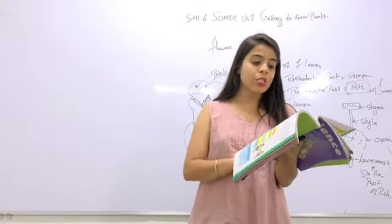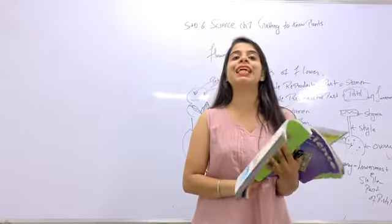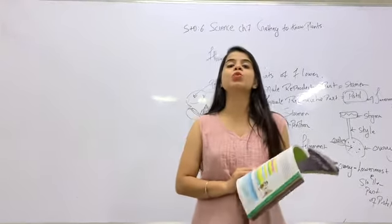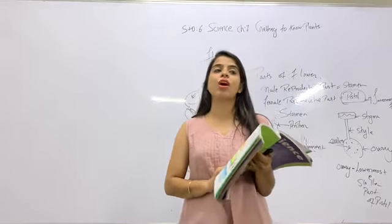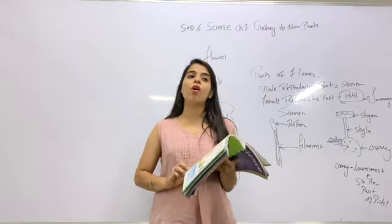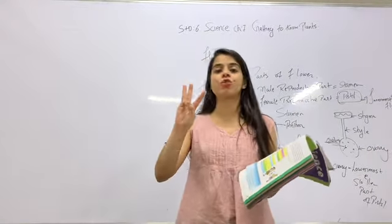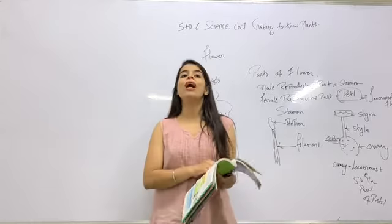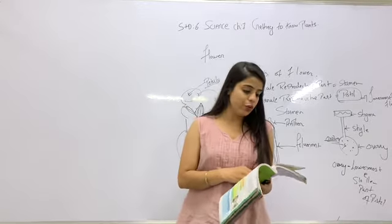Quiz question 4: What are the small leaf-like structures found inside the ovary called? The answer is ovules.